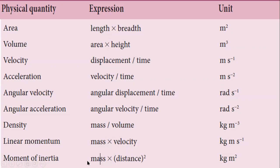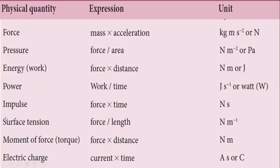Moment of inertia is given by the formula: mass into distance squared. Mass is kilogram and distance is meter, so distance squared is meter squared, giving kilogram meter squared. Force is mass into acceleration. Mass is kilogram and acceleration is meter per second squared, so force is kilogram meter per second squared, written as kg m s⁻². Another common unit for force is Newton, symbolized with a capital N, named after the scientist.